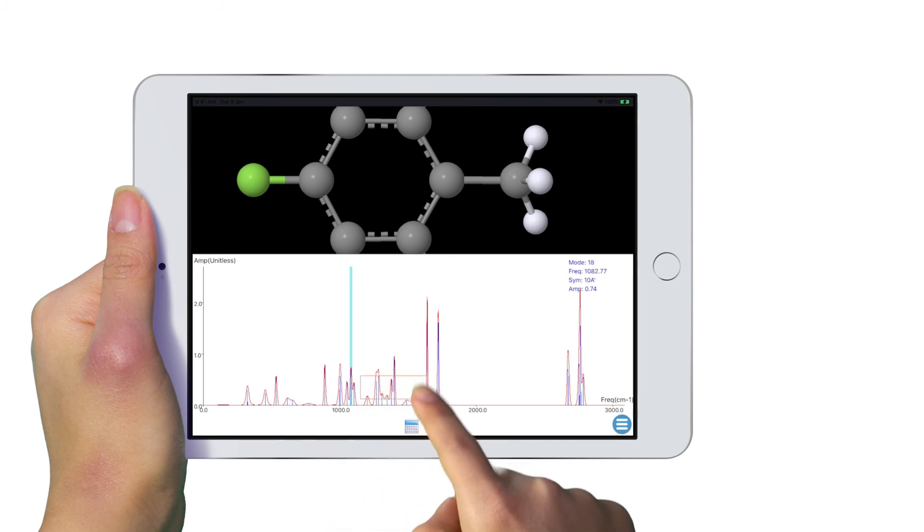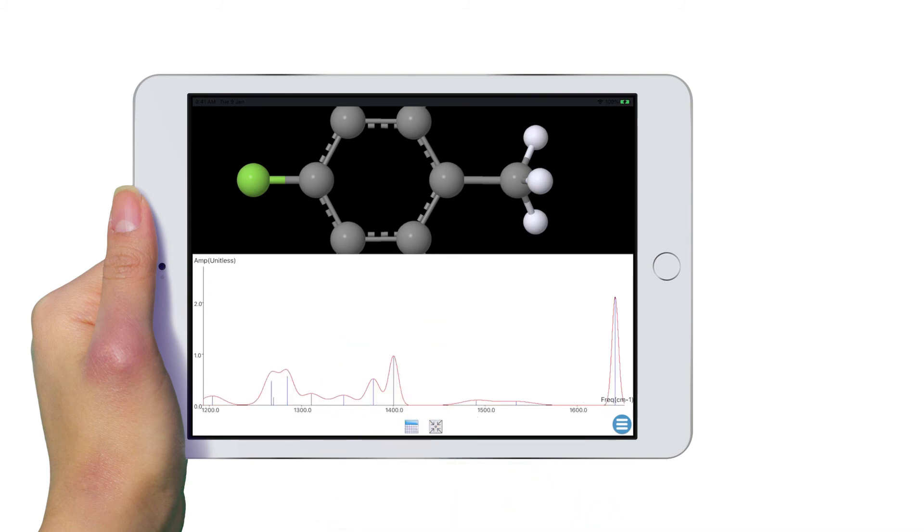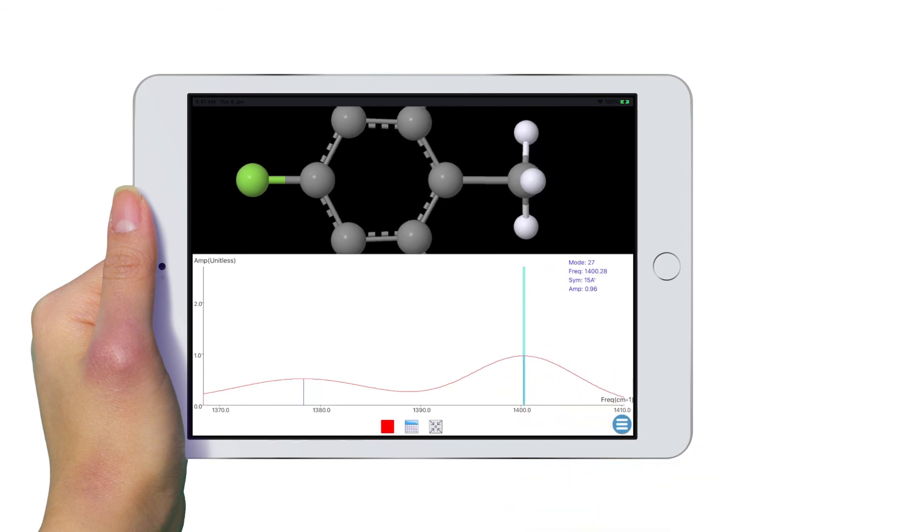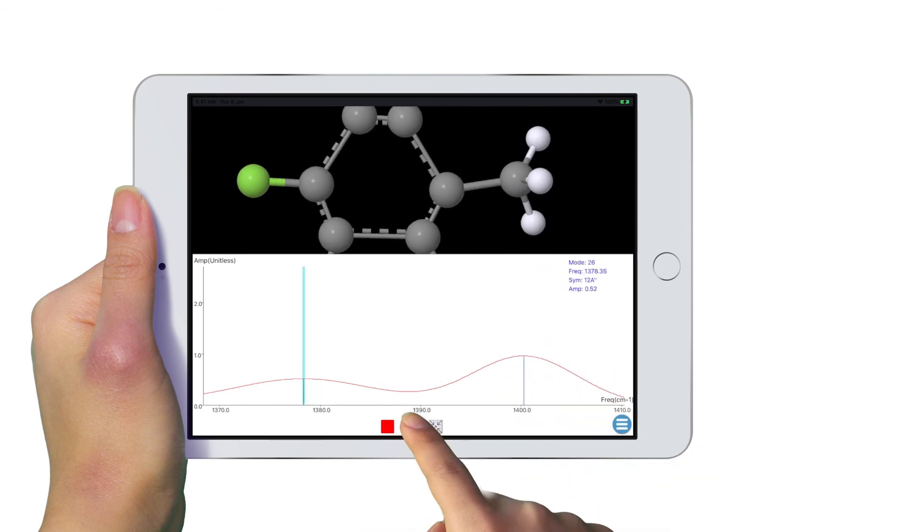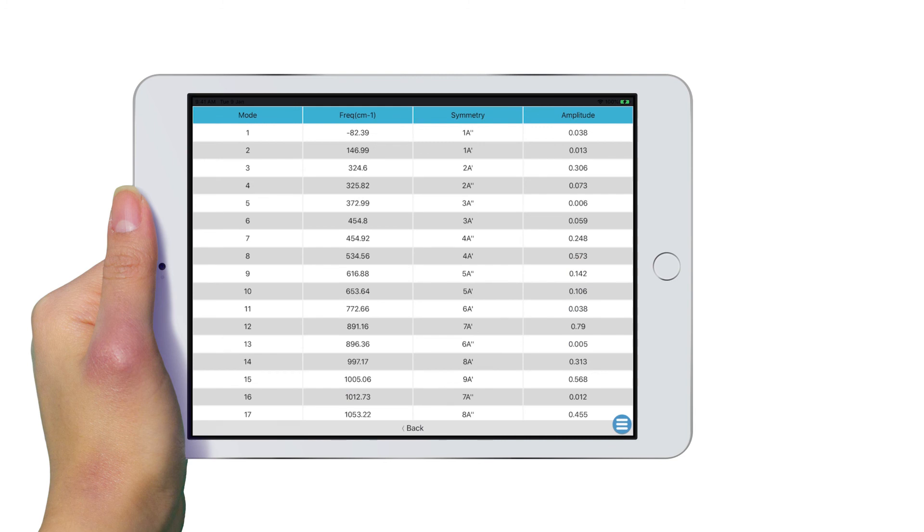Swipe across the area on the spectrum to zoom out. You can continue to do so to see all frequencies contributing to a peak clearly. Double tap on a frequency to animate its vibrational mode. You can tap on the table to view all frequencies. Select one to view its vibrational mode.